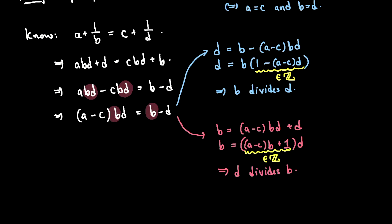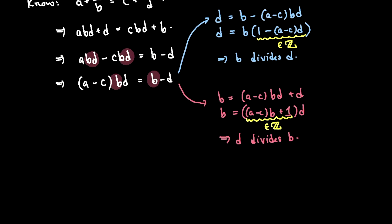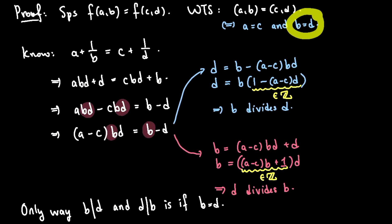And how can two natural numbers divide each other? How can b divide d and d divide b and both are positive? The only way that can happen is if b equals d, which is part of what I wanted to prove.